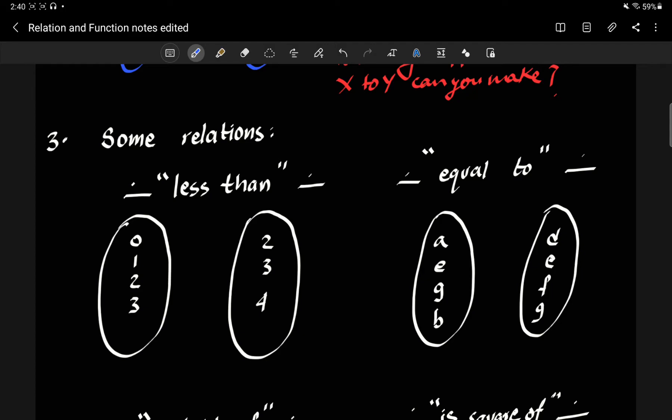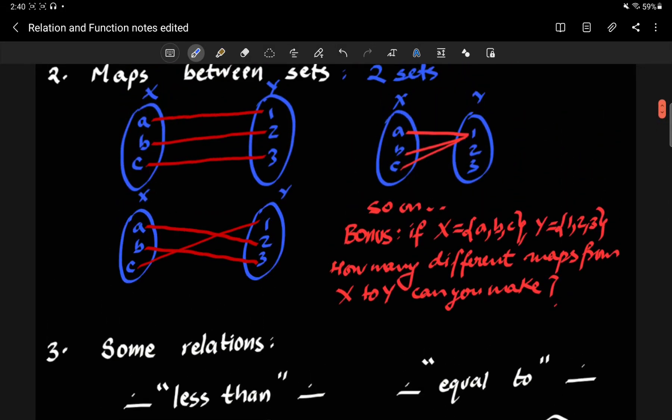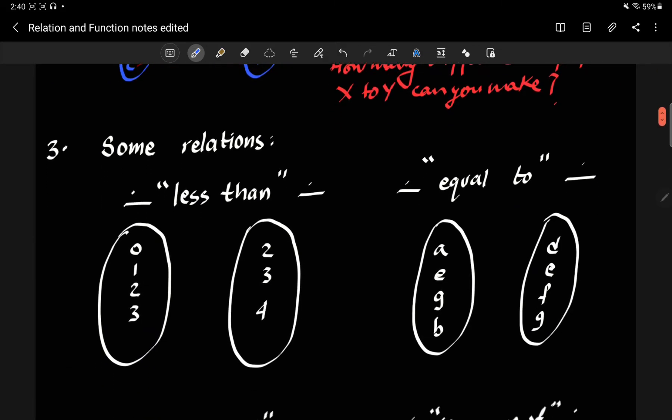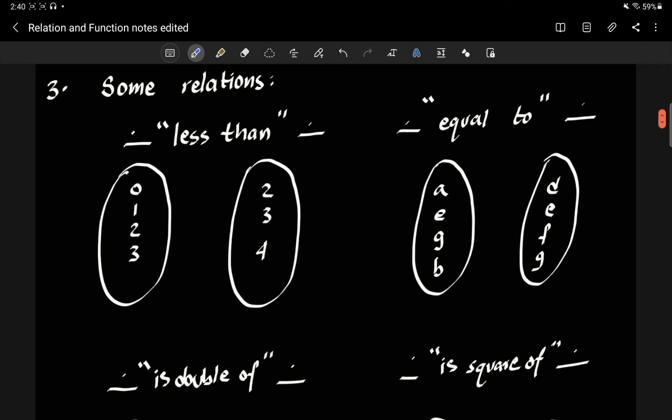Now, these relations can be described in words, right? So in the previous case, what we did was we described a relation directly by making the diagram, by connecting the lines. But they could also be described using words. Let's look at some examples.